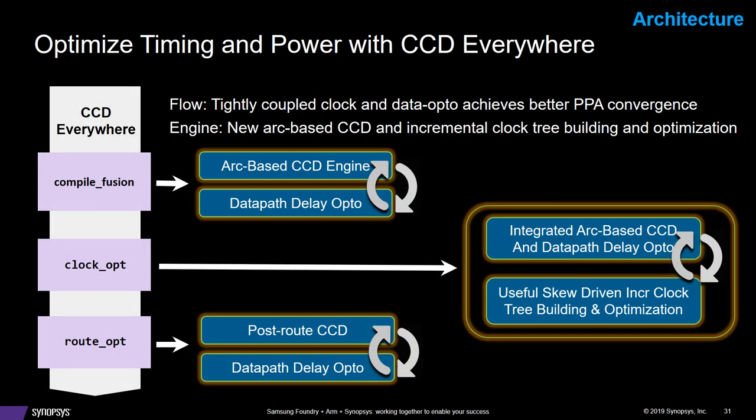The macro skewing feeds into CCD Everywhere — both are useful skew, but CCD Everywhere is part of the optimization. It starts at the very beginning, at compile fusion, prior to CTS. It starts setting directives for CTS, setting targets, and with the assumption it can meet those targets, it starts to skew the design and optimize accordingly. There's a tight loop — you'll see a couple of iterations of delay optimization, then an iteration of CCD kick in, going back and forth. That feeds into CTS in the clock-op step, giving directives for useful skew targets. Then it follows up in route-opt with iterations of CCD and data path optimization.